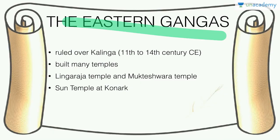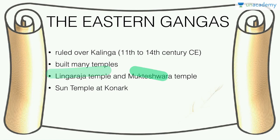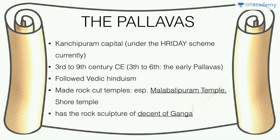The Eastern Gangas ruled over Kalinga — Odisha — and built many temples. Important ones include the Sun Temple at Konark, the Lingaraj Temple, and the Mukteshwar Temple — all in Odisha. You need to know the Sun Temple especially: what it is, how it is used, and its architectural significance. We are essentially studying art and culture by connecting it to the polity of each period.